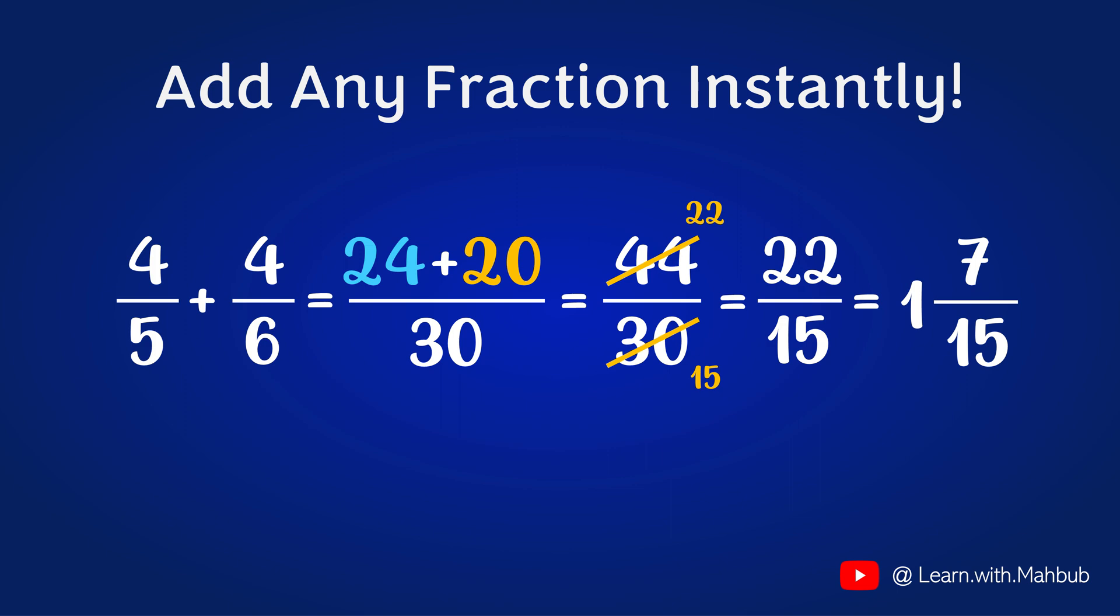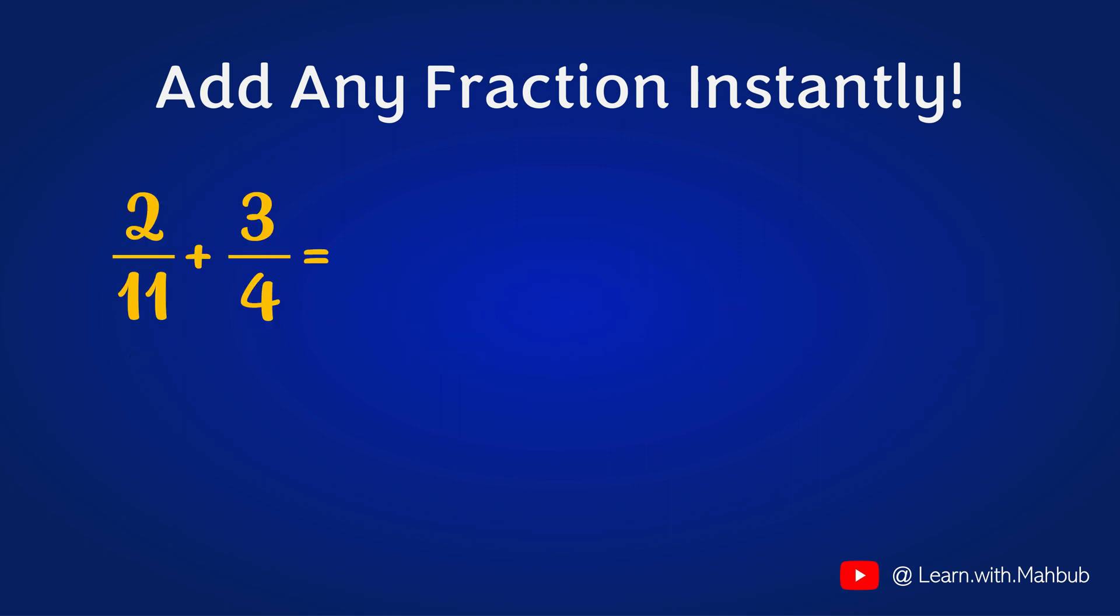Now we will learn how to calculate it faster in your head with two more examples. We will add 2 elevenths with 3 fourths and 5 thirds with a half. The first one, the denominator will be 11 times 4 is equal to 44 and the numerator will be 8 plus 33 which is 41.